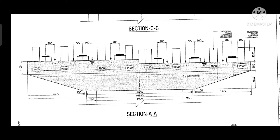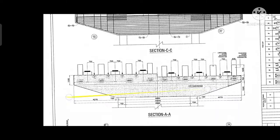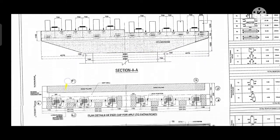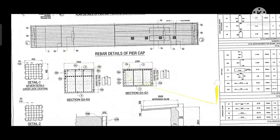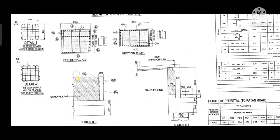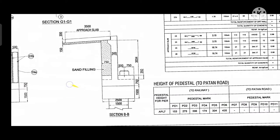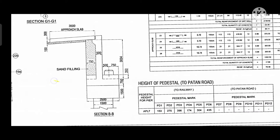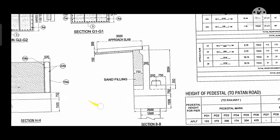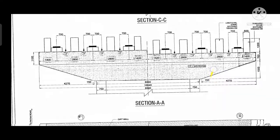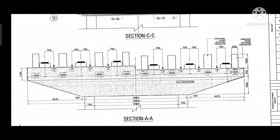The step of the pier cap is 315 mm. Then we will see the BB section, which is the approach slab section showing sand filling. We can see the approach slab thickness and wall thickness everywhere in the drawing.